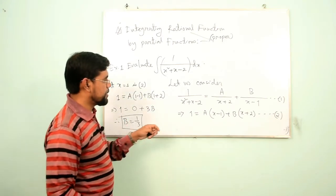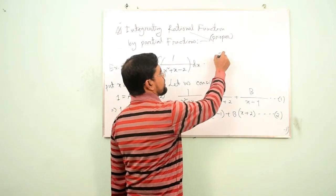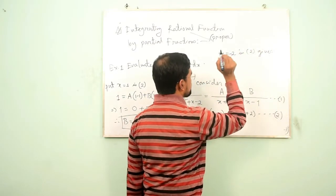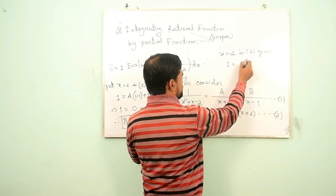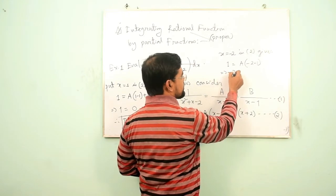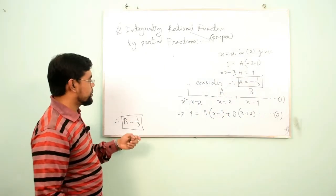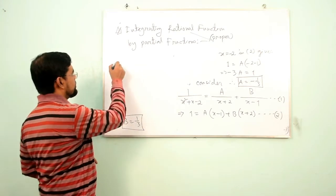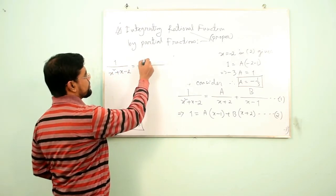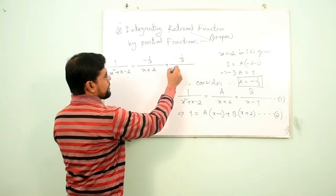Similarly, by putting x = −2 in Equation 2 to eliminate B: 1 = A(−2 − 1) + 0, since (−2 + 2) = 0. This implies −3A = 1, therefore A = −1/3.